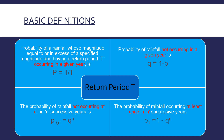So the probability of a rainfall occurring in a given year, with return period T, is P = 1/T. That is, if we have return period T, then the probability of it occurring in a given year is 1/T. This is the probability of rainfall.